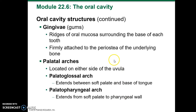Continuing with the oral cavity structure, the gingiva or the gums are the ridges of the oral mucosa that surround the base of each tooth. It firmly attaches to the periosteum of the underlying bone.